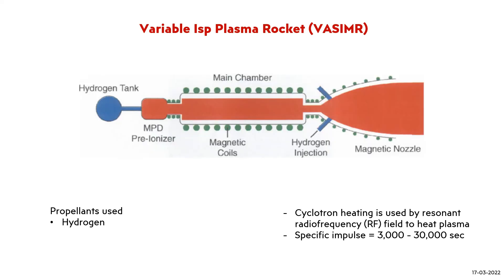Now, coming on to the Variable Specific Impulse Magnetoplasma Rocket, i.e. VASIMR. A plasma rocket uses a magnetic field to confine plasma and electromagnetic energy to heat it. In the VASIMR concept, hydrogen is ionized and injected into the main chamber by a magnetoplasmadynamic (MPD) device. The magnetic field isolates the plasma from the chamber wall so that the temperature can exceed the material melting limit and therefore reach very high specific impulse. In the main chamber, electron and ion cyclotron heating is used by applying a resonant radio frequency (RF) field to heat the plasma, which is then expelled through the magnetic nozzle.